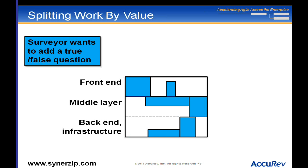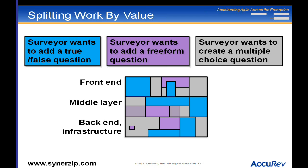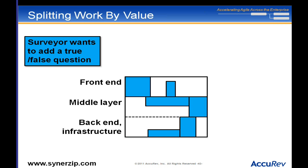If true/false is all I ever need, then actually doing the other parts is a waste economically. If it turns out I do need the other two stories and have to rewrite some code because assumptions were wrong, that's fine — because the money it costs me to go back and change that code is going to be a lot less than the additional revenue I get from focusing on economic efficiency. So splitting by value is a very important topic.